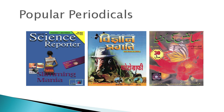Now we come to popular periodicals. Popular periodicals are devoted to a particular subject area and contain articles written in simple language. These periodicals are meant for the general public who do not have specialized knowledge of a particular subject. They are published to inform, educate and entertain the public. An example is Science Reporter, which is normally published in English but is also published in Hindi and Urdu.